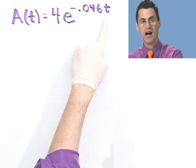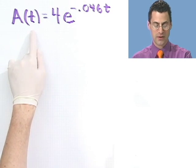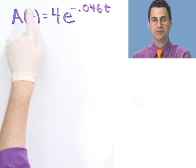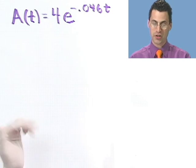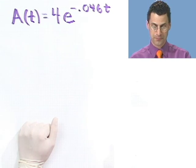The amount remaining in the body after t hours is given by 4e to the minus 0.046t. So if you give me the time, I'll be able to figure out how much is left in the body. We're starting with 4 — I remind you, we start with 4.